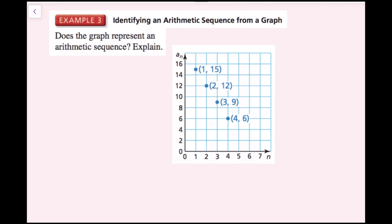For example 3, we're going to identify an arithmetic sequence from a graph. Does this graph represent an arithmetic sequence? Looking at this graph, my first term is 15, my second term is 12, my third term is 9, and my fourth term is 6. The common difference here is negative 3, because each time I'm subtracting 3. So yes, this is an arithmetic sequence. We also know this because we have a linear relationship — it is possible to draw a line through all these points.